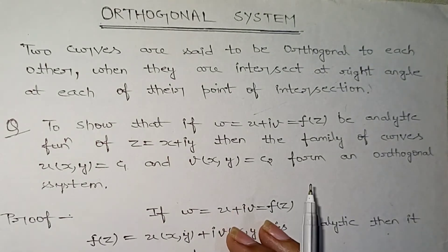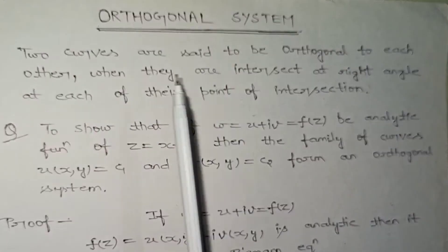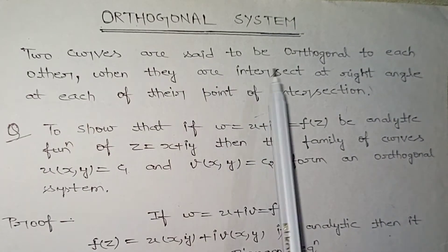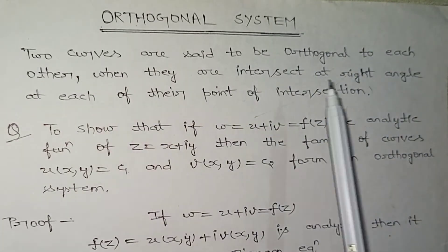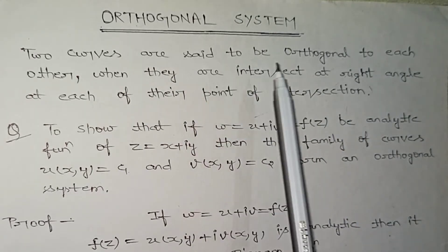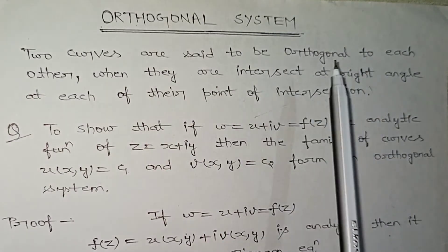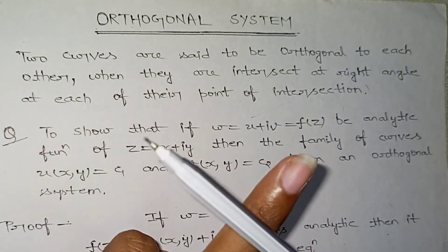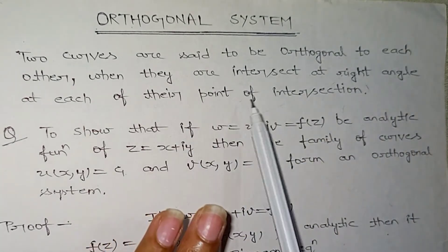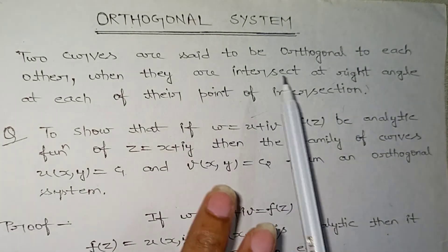So let's start this topic. First, you have a definition of Orthogonal System. What is an Orthogonal System? Two curves are said to be orthogonal to each other when they intersect at right angles at each of their points of intersection. These curves are called an Orthogonal System.